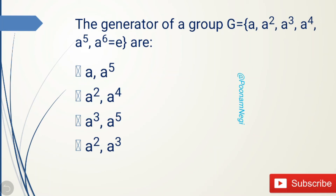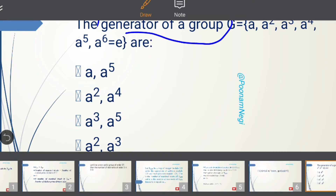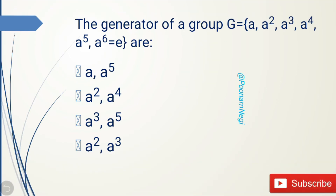Hello students, let's understand the concept of a cyclic group and what is the generator of a group with the help of an example. The problem is: find the generator of a group G, which is given as the set {a, a², a³, a⁴, a⁵, a⁶} where a⁶ is equivalent to e, the identity element.